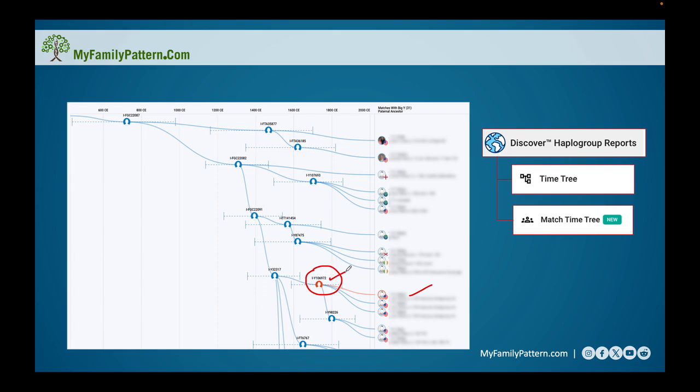My haplogroup here is the parent and this is a child. These two have a specific mutation that they both share that therefore enabled them to create their own haplogroup.